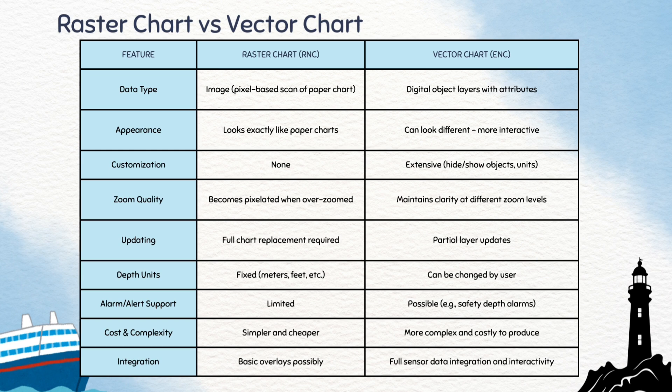Because a raster chart is one big image, if you need to update it, you have to replace the whole file. With a vector chart, you only have to update the specific pieces of data that change. A raster chart has limited functionality because it's not smart. A vector chart, on the other hand, can be programmed to give new alarms and alerts, like when you are entering a shallow area. In summary, raster charts are simple digital copies of paper charts, while vector charts are advanced, interactive charts providing more features for modern navigation.